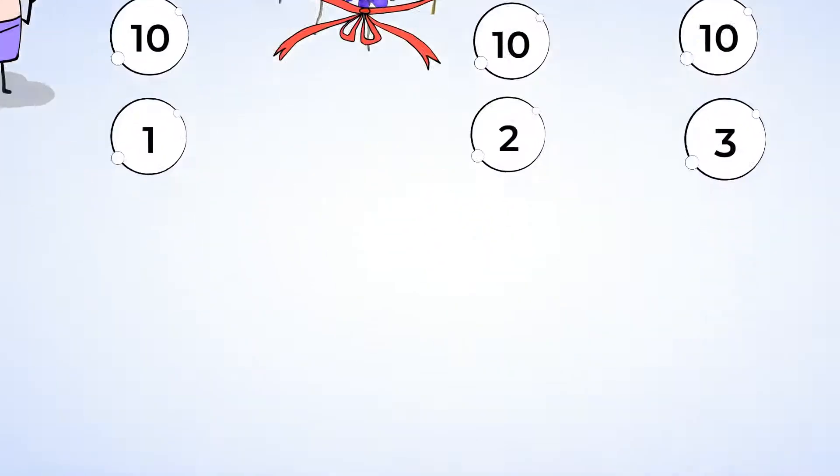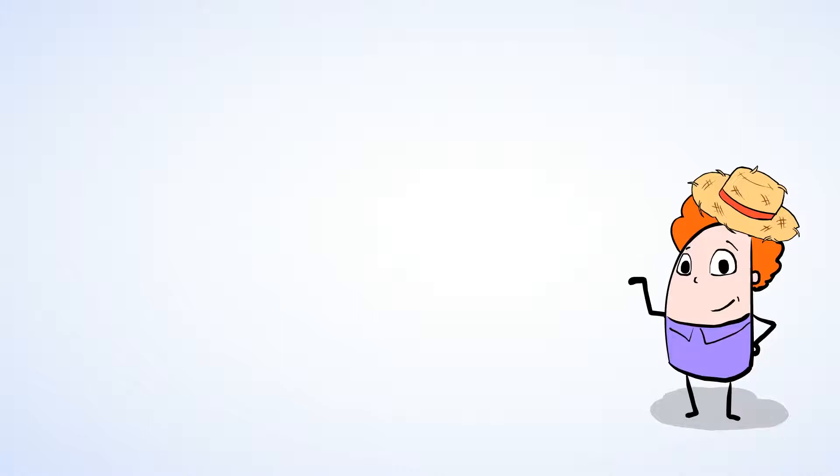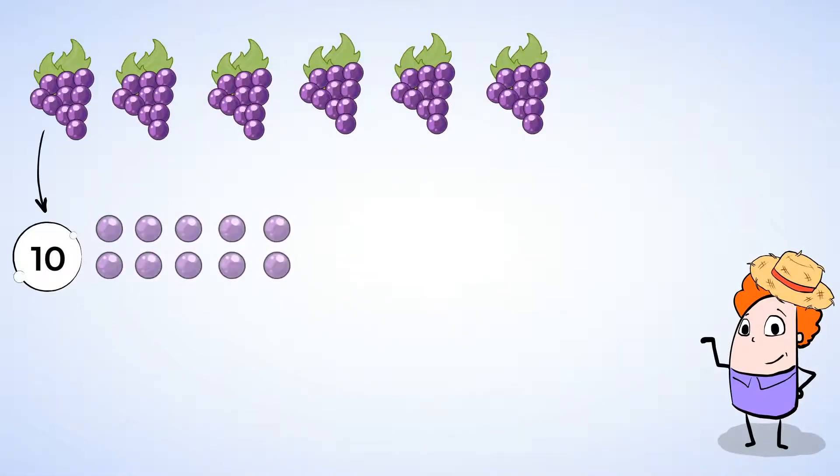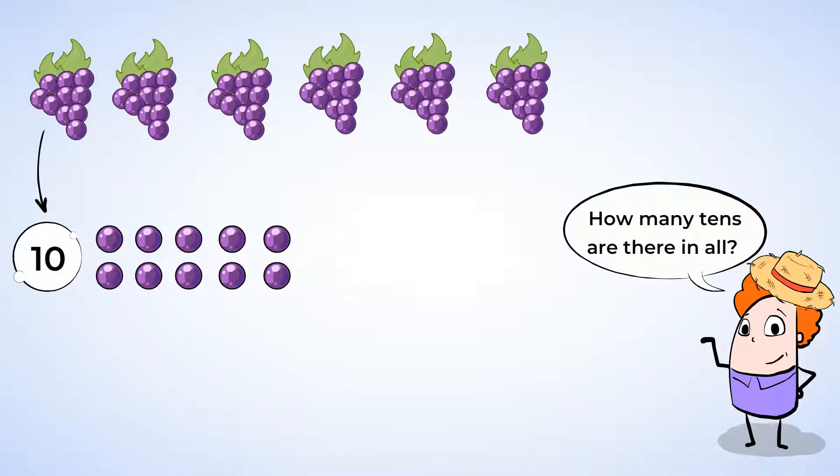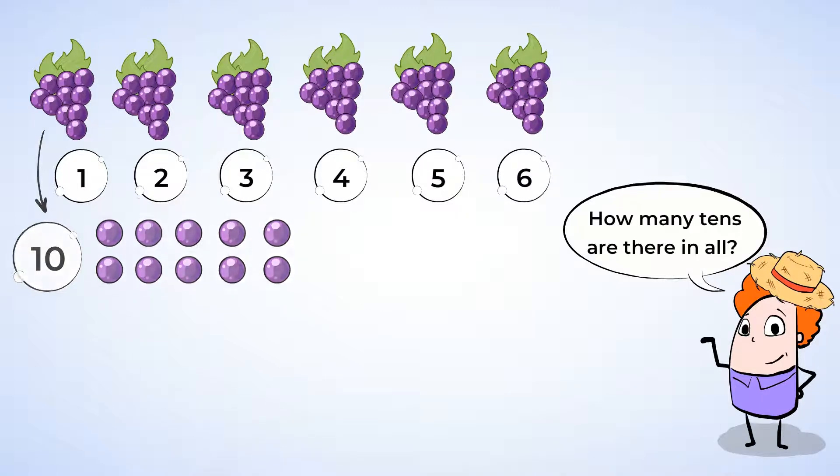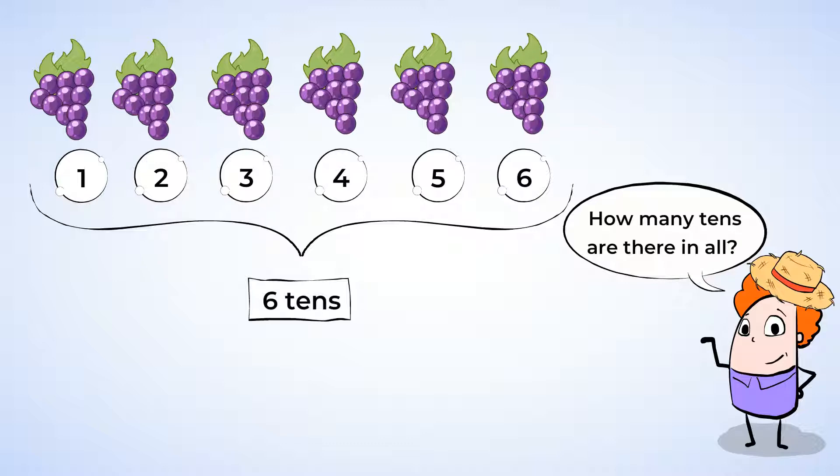Let's try another example. Oh, I see some juicy bunches of grapes. Each bunch has 10 grapes. So how many 10s are there in all? 1, 2, 3, 4, 5, 6. There are 6 groups of 10, or 6 10s. And because each group has 10 grapes, we can count by 10s to find out how many grapes there are in all. 10, 20, 30, 40, 50, 60. There are 60 grapes. And that means that 6 10s is the same thing as 60. 6 10s equals 60.